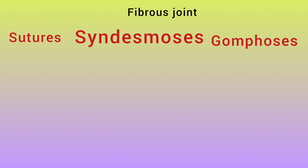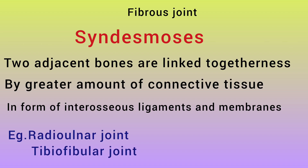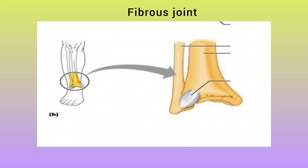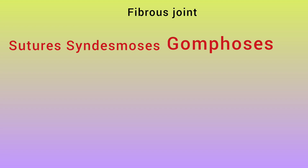Next we have syndesmosis. Compared to sutures, syndesmosis has a greater amount of fibrous connective tissue. Two adjacent bones are linked together by an interosseous ligament or membrane. For example, the radioulnar joint and the tibiofibular joint. These joints allow slight movement.